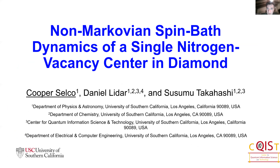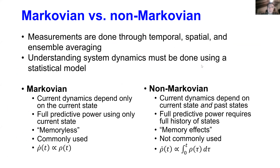When we make measurements in experimental quantum experiments through different types of averaging, we need statistical models to understand system dynamics. The first is the Markovian model, where the current dynamics depend only on the current state of the system. To have full predictive power of future outcomes, you only need to know the current state. These models are called memoryless — no memory of previous system states is required — and they are the most commonly used in experimental quantum science because they are the easiest to solve and derive.